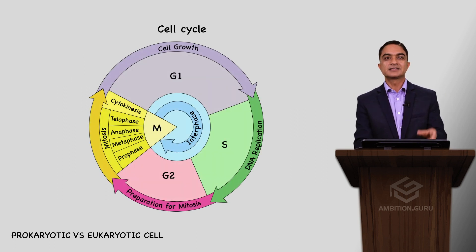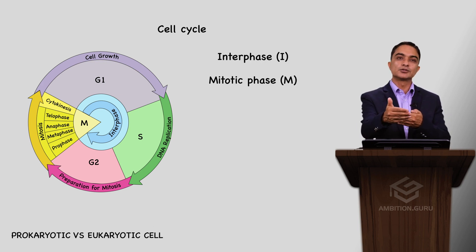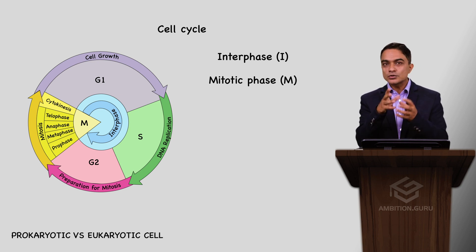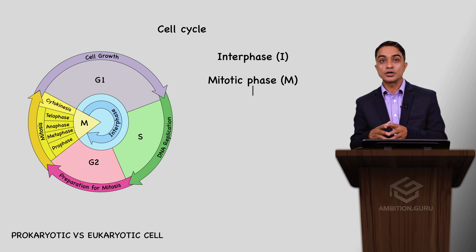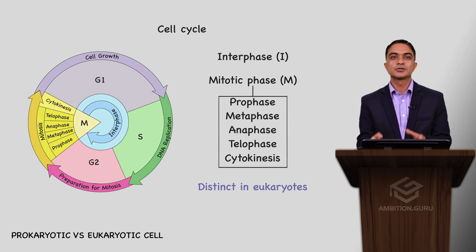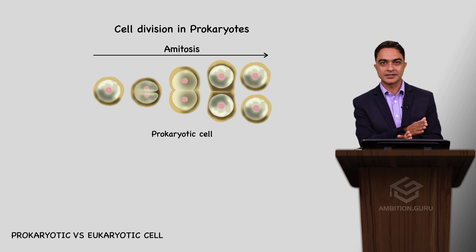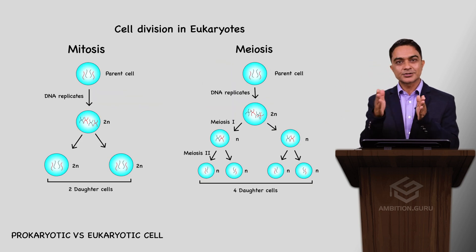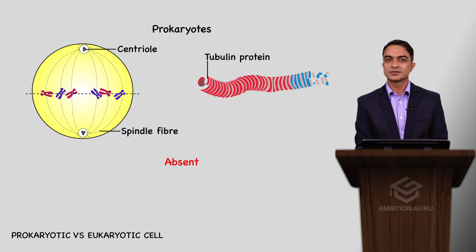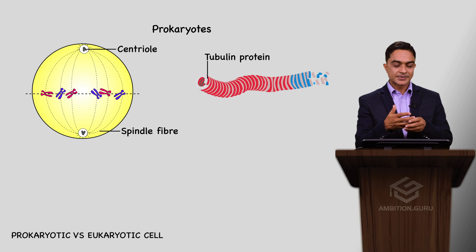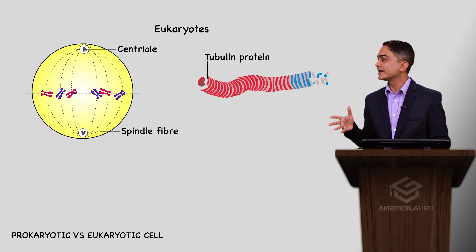The cell cycle is distinct from prokaryotes. Cell division in prokaryotes is of the amitosis type — true mitosis is absent. Cell division in eukaryotes involves mitosis. Spindle fibers, centrioles, and tubulin protein are absent in prokaryotes but present in eukaryotes.